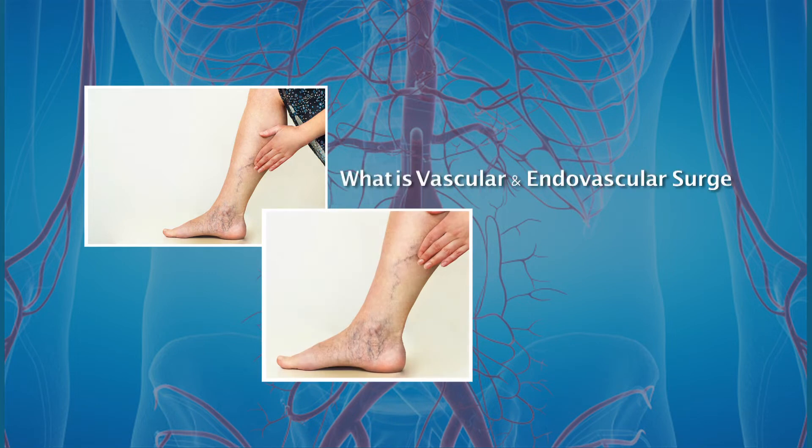Vascular and endovascular surgery is a branch of medicine which treats the diseases of artery, vein and lymphatics. Arteries are the ones which take the blood from the heart to every other part of the body, and veins are the ones which take the blood back to the heart to get it purified. Vascular and endovascular surgery is the specialty that deals with and treats the diseases of arteries, veins and lymphatics.